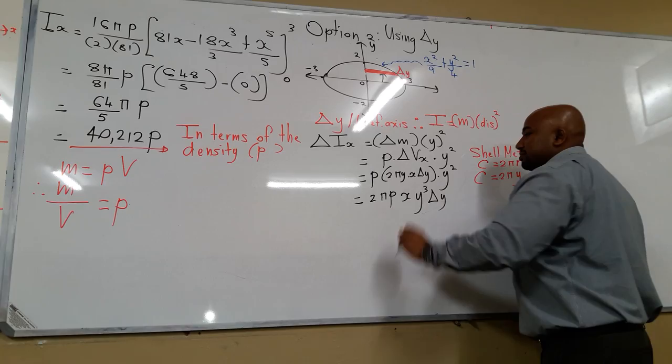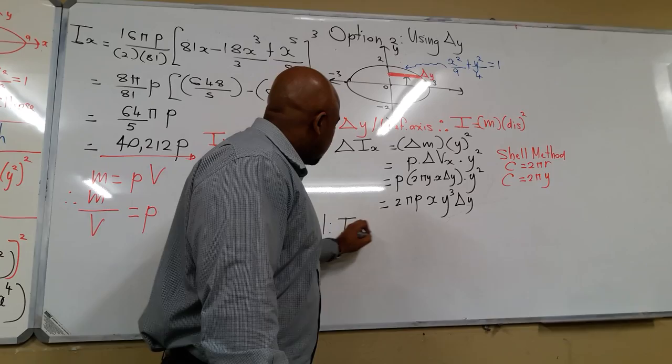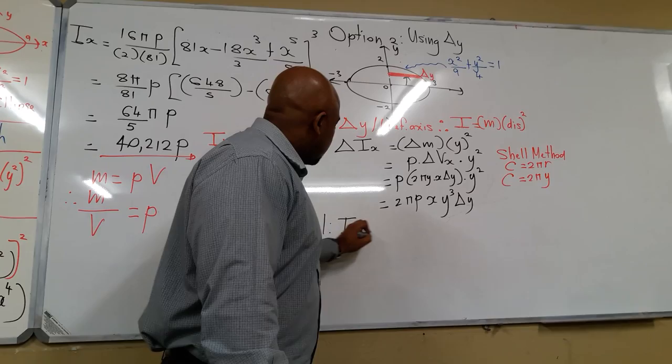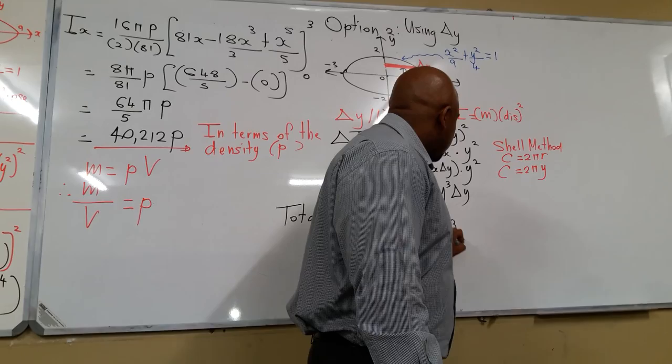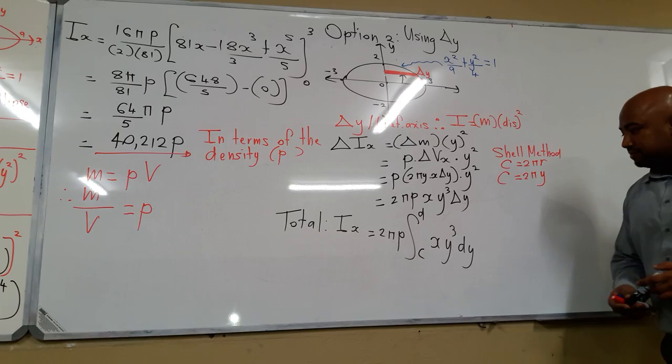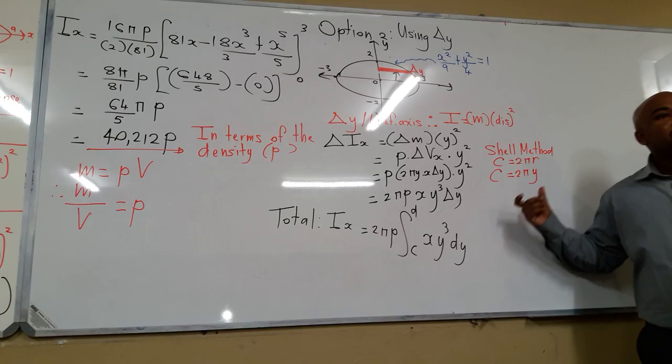Writing the total: Ix equals 2 pi rho integrated from c to d of x times y cubed dy. Since this is dy, we are integrating with respect to y, so we need to get x in terms of y.